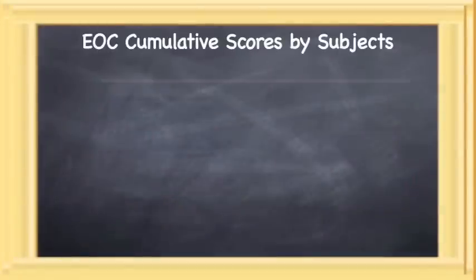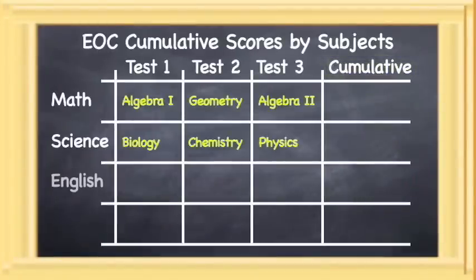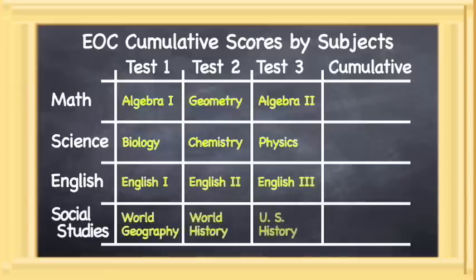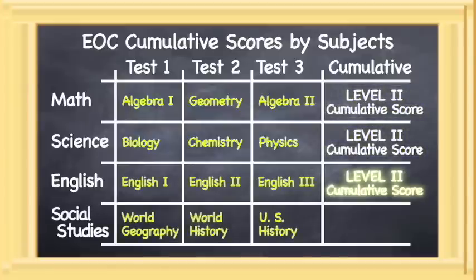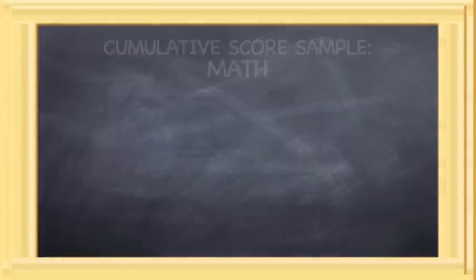In order to graduate under the new STAR system, high school students must achieve a minimum passing score on all end-of-course exams listed here and meet the state's Level 2 Cumulative Score requirement in all four content areas, which are math, science, English, and social studies.